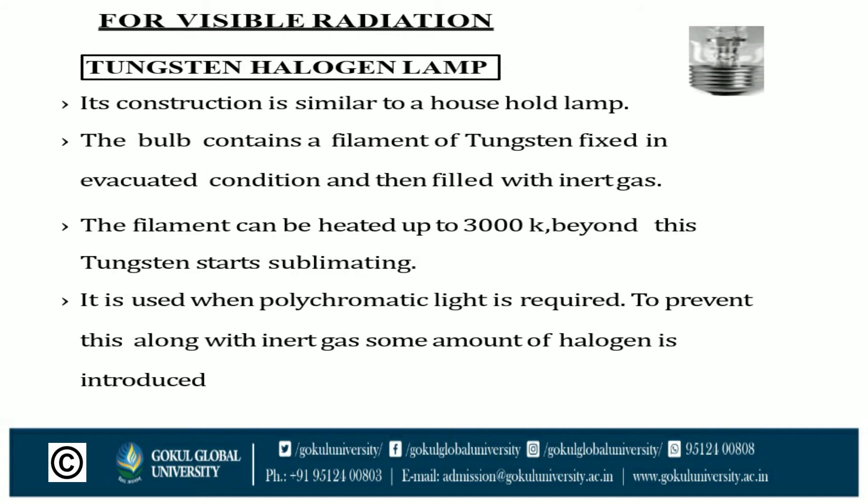For visible wave radiation, various lamps are used. The first is the tungsten halogen lamp. Its construction is similar to a household lamp. The bulb contains a filament of tungsten fixed in an evacuated condition and then filled with an inert gas. The filament can be heated up to 3000 Kelvin, beyond which tungsten starts sublimating. It is used when polychromatic light is required. To prevent sublimation, along with the inert gas, some amount of halogen is introduced.